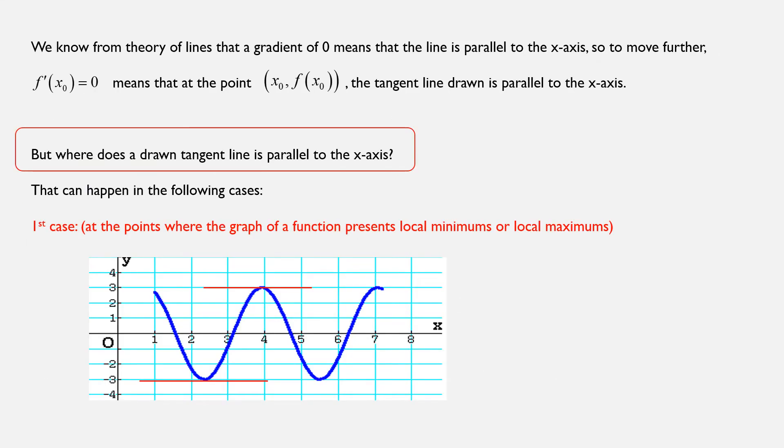We also know from theory of lines that a gradient of 0 basically means that the line is parallel to the x-axis. And to move further, we could say that f'(x₀) equals 0 could geometrically mean that at that point with these coordinates (x₀, f(x₀)), the tangent line that is drawn is parallel to the x-axis. So once again, f'(x₀) is 0 can geometrically mean that at the point with x-coordinate equal to x₀, the tangent line that is drawn is parallel to the x-axis.